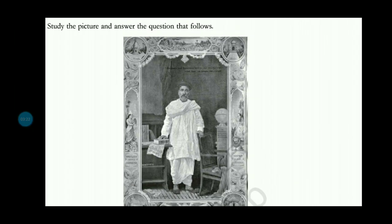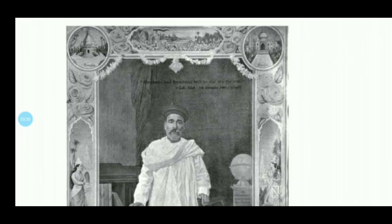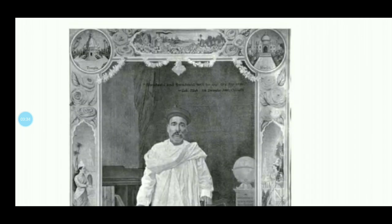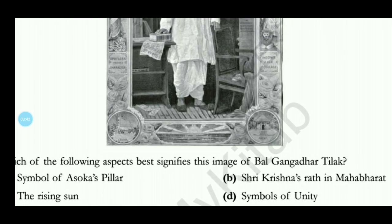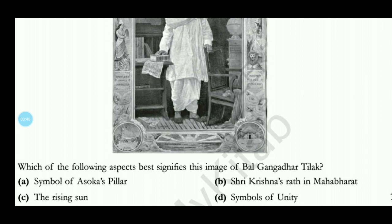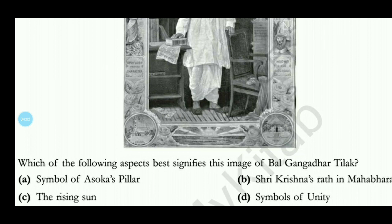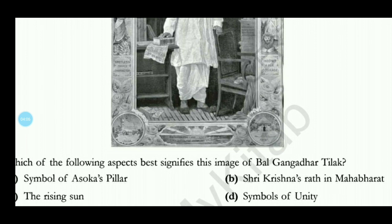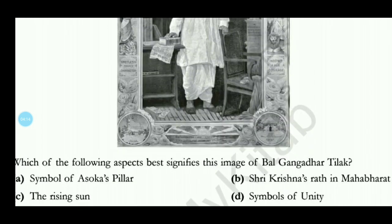The next picture is about nationalism and is very important. You can see Bal Gangadhar Tilak's picture, and on the side you can see different religious places — mandir, masjid, gods, and goddesses. The question asks what best signifies the image. The symbol of Ashoka's pillar is not shown, nor is Shri Krishna from the Mahabharata. The rising sun is not a symbol of unity, so the correct answer is symbols of unity — you can see the temple, the goddesses, and symbols of unity.